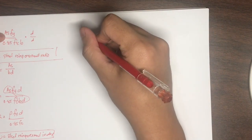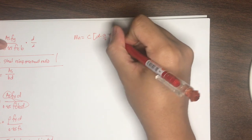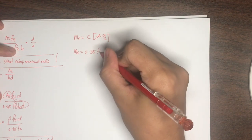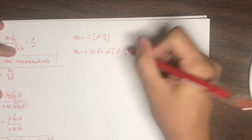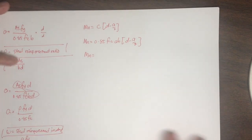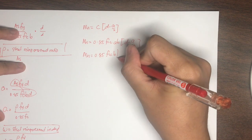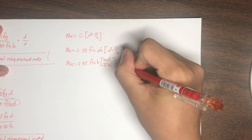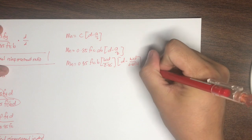Going back to the moment formula: Mn equals C times (D minus a/2), which is 0.85·fc'·A·B multiplied by (D minus a/2). Substituting A equals omega·D/0.85, we get Mn equals 0.85·fc'·B times (omega·D/0.85) times (D minus omega·D/(0.85×2)).